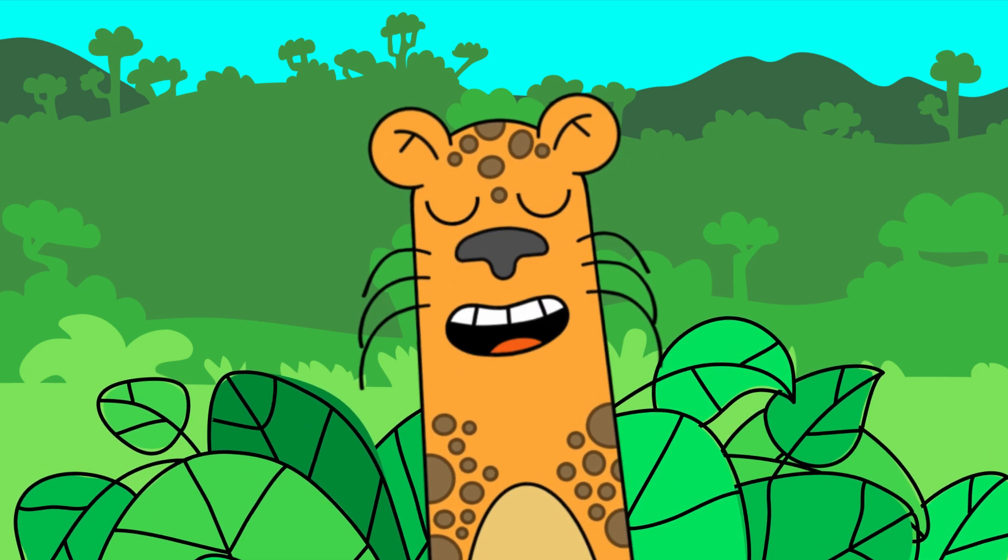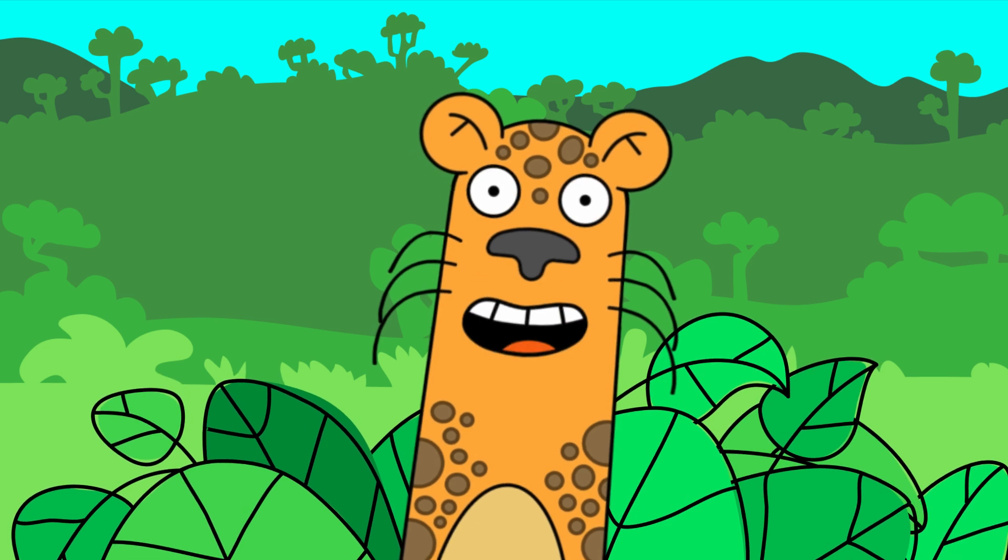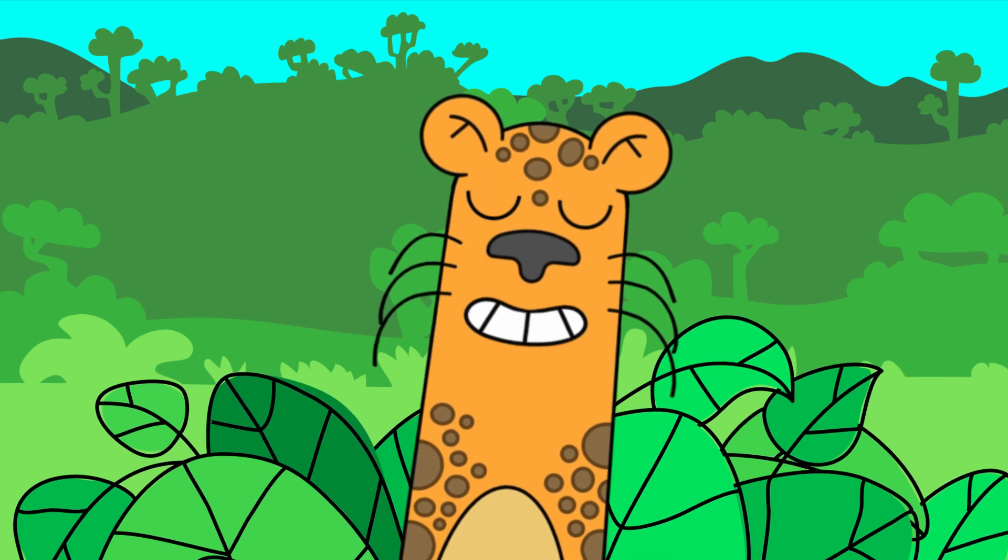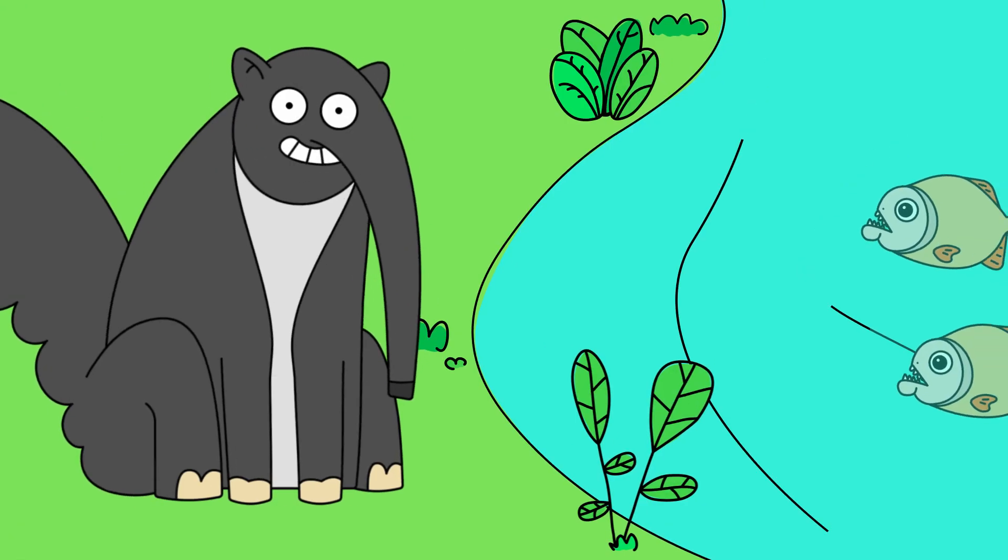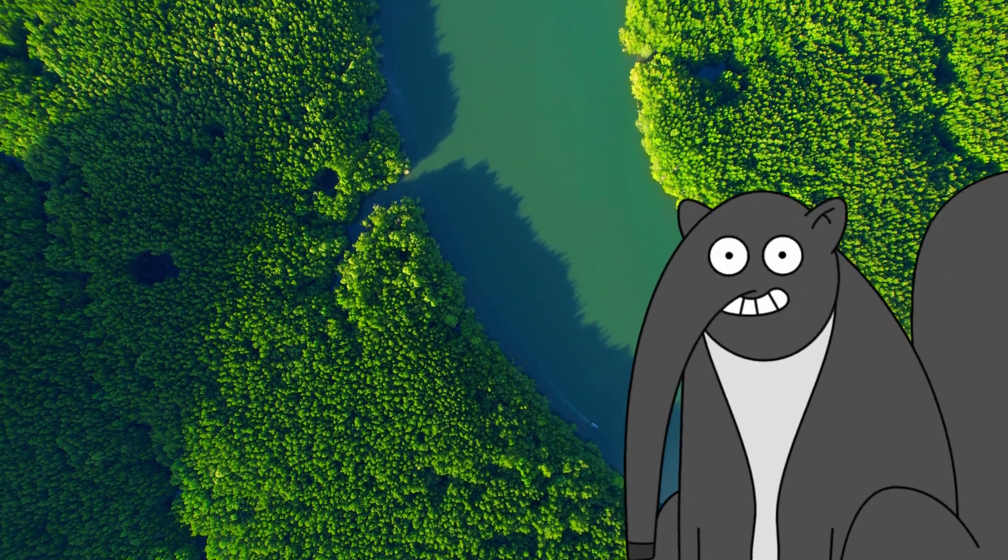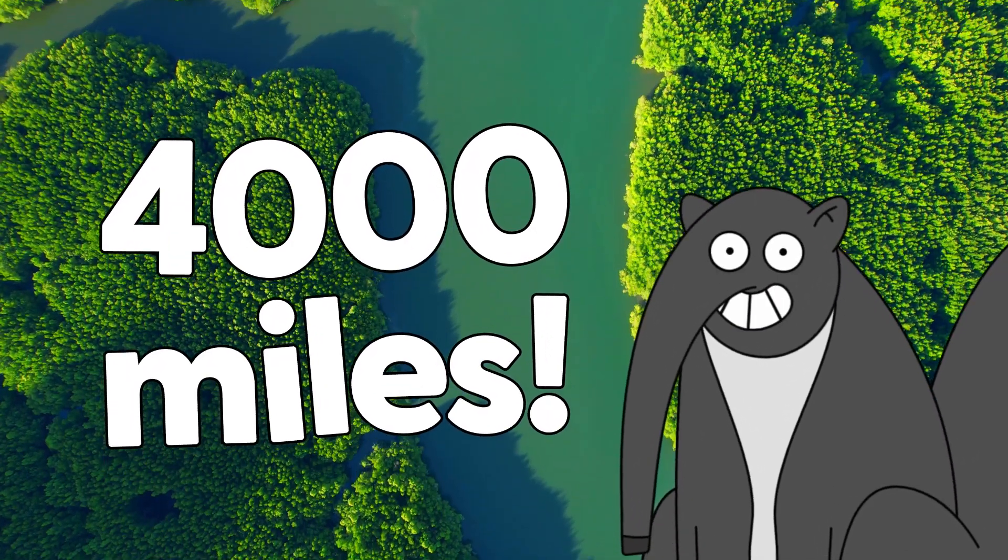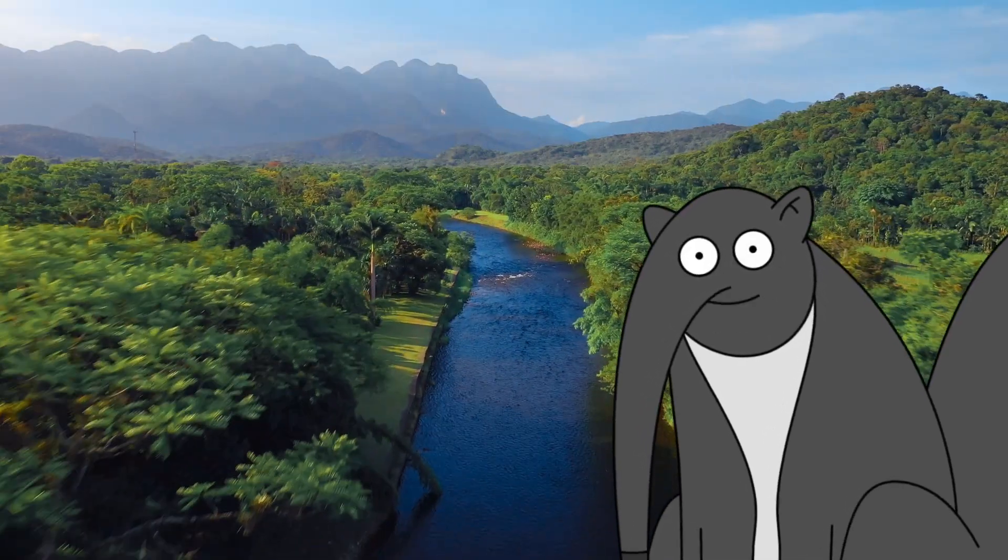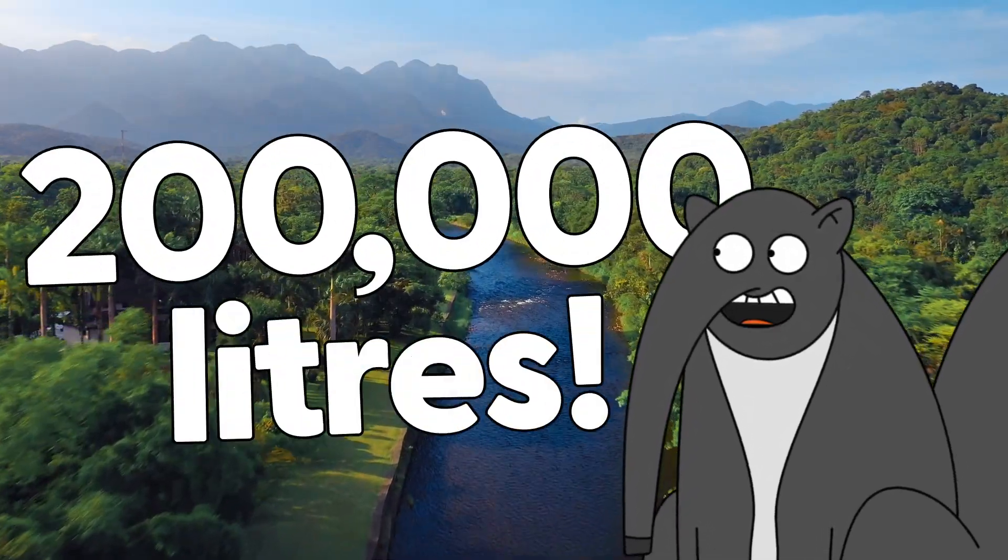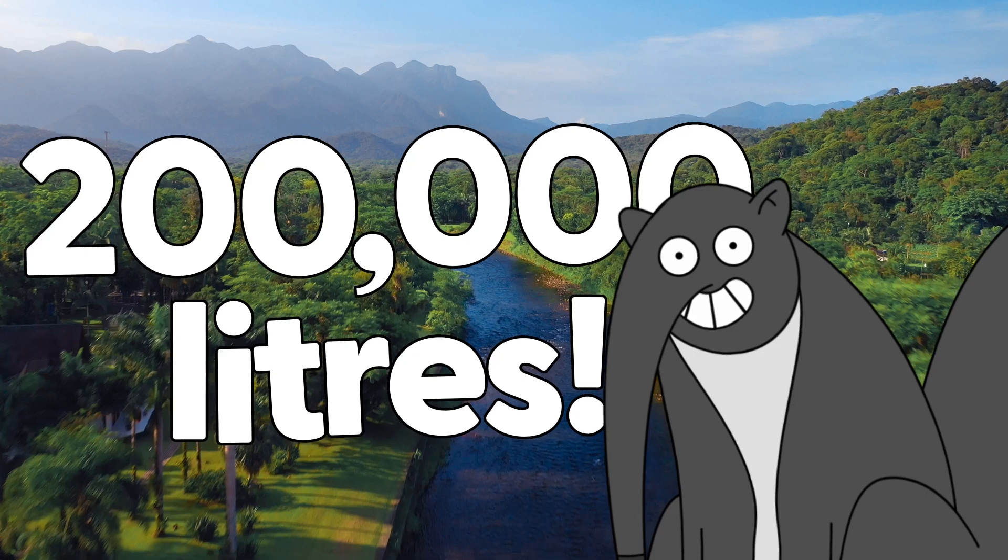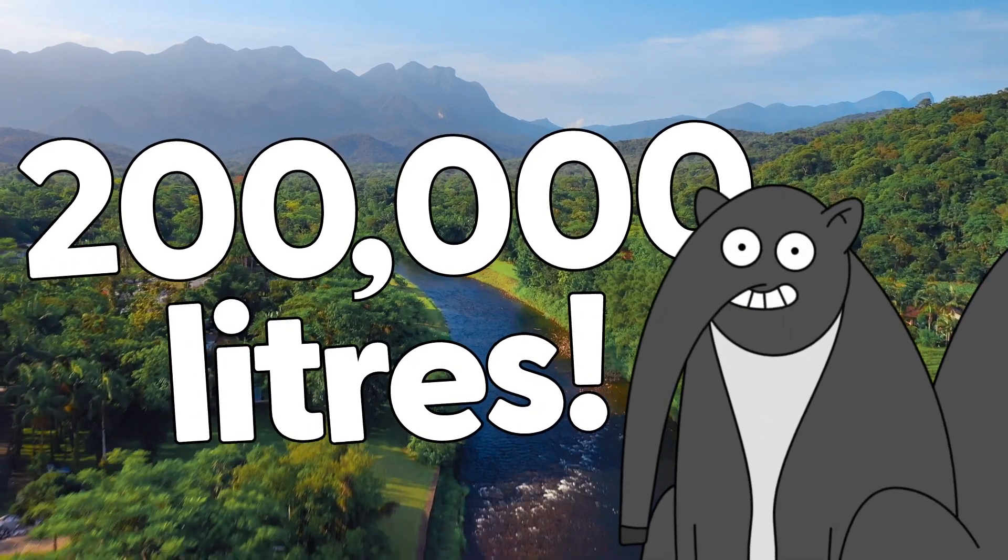And it's not just animals up in the trees that need water! There are piranhas and dolphins and so much more! Rivers and lakes! The Amazon River flows through the rainforest! It is 4,000 miles long! It also pumps over 200,000 litres of fresh water into the ocean every second!